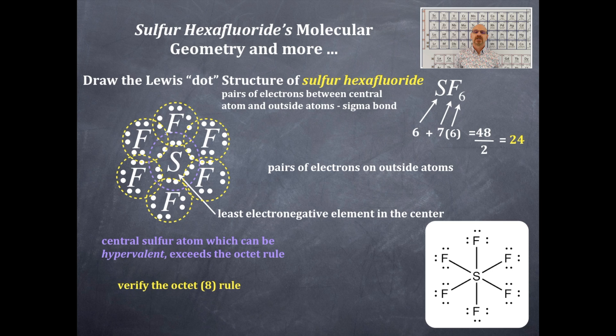We're gonna get the AX notation. Okay the A is the sulfur. The X are the six fluorines and the E, well there aren't any E's on the central element so there is not an E of any kind so I just have AX6. So how many bonding domains and how many non-bonding domains on the central element? There are six bonding domains and zero non-bonding domains on the central element.